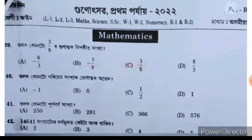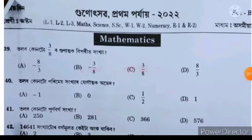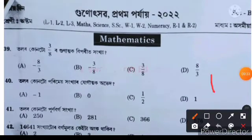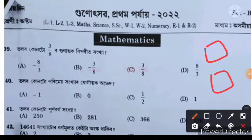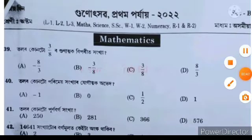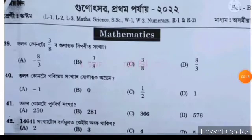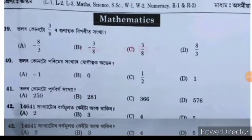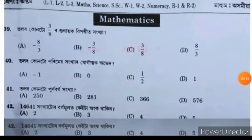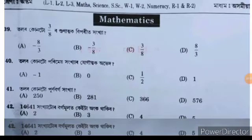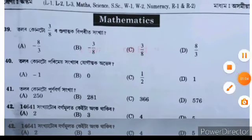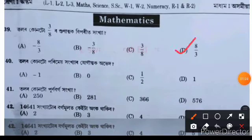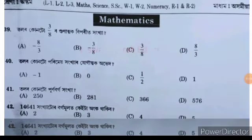Now I will start the video. We have set question 39. The options are: A is minus 8 by 3, B is minus 3 by 8, C is 3 by 8, and D is 8 by 3. The right answer is option D: 8 by 3.